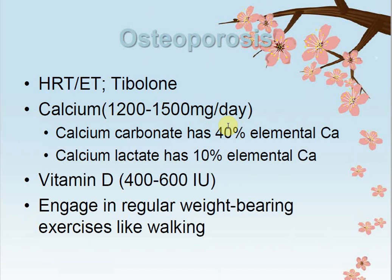For osteoporosis, tibolone hormonal therapy including estrogen therapy is best. Calcium and vitamin D3 are included. Patients can be given separately 1200 mg to 1500 mg of calcium per day according to age. Calcium carbonate has 14% elemental calcium and calcium lactate has 10% elemental calcium. Vitamin D is 400 to 600 IU. Regular weight-bearing exercise such as walking is encouraged to maintain body weight and reduce pressure on bones.